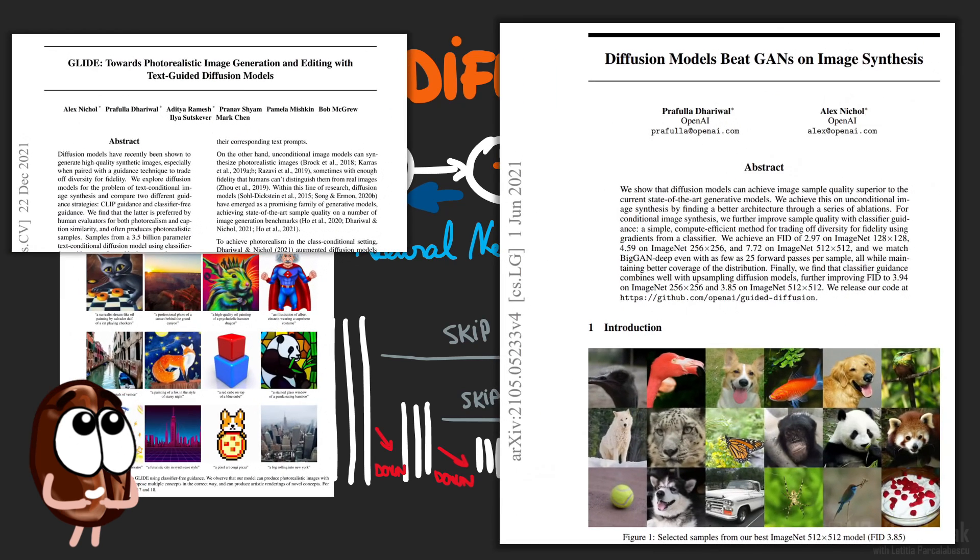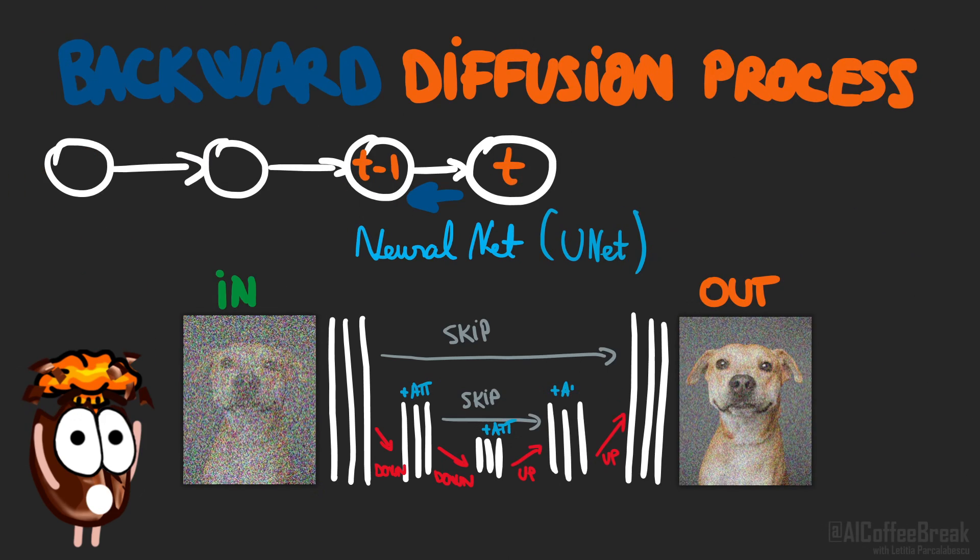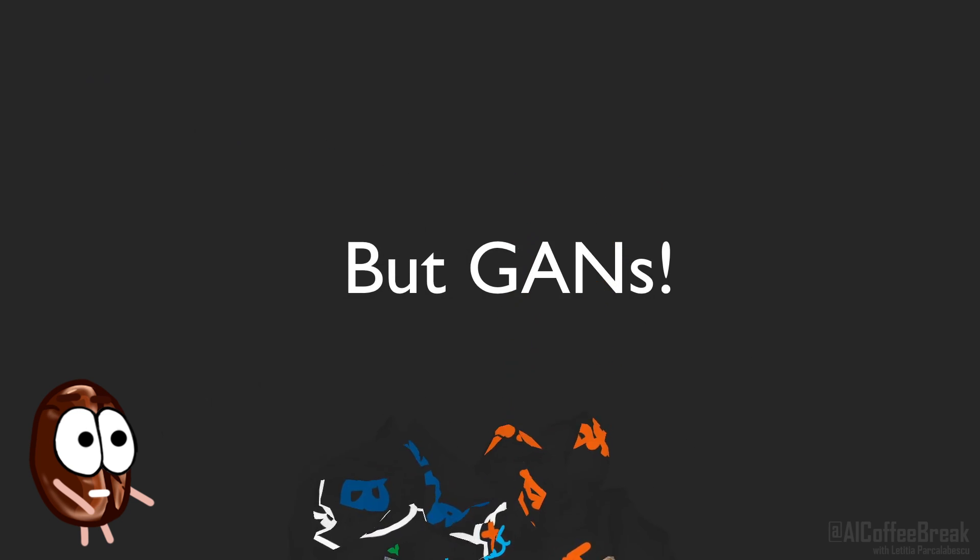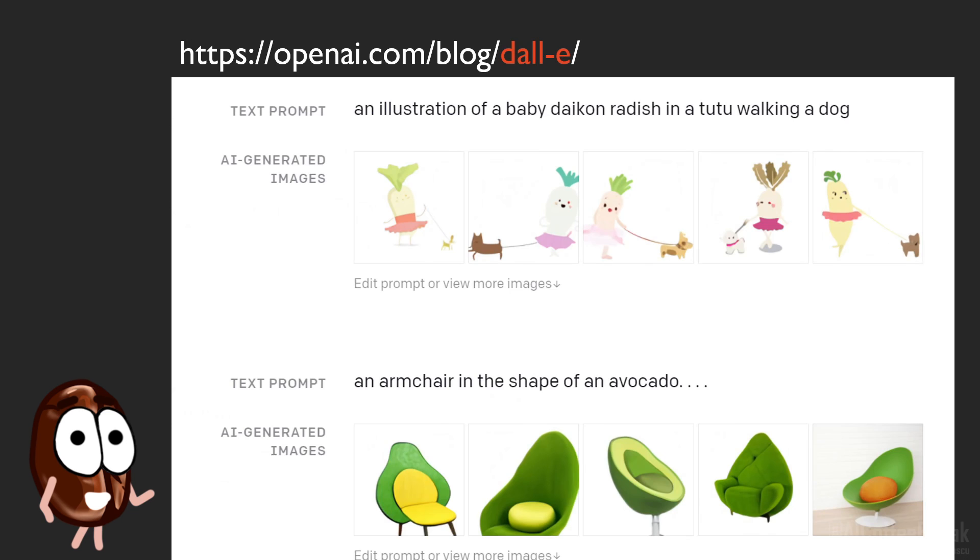A U-Net is a convolution-based neural network that is downsampling an image into a lower dimensional representation and reconstructs it during upsampling. The downsampling and upsampling stacks communicate through skip connections. And the U-Net, used in these two papers, also uses global attention in the lower resolution layers, because, you know, it's all you need after all.